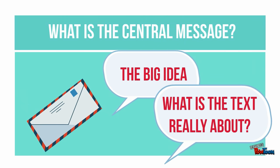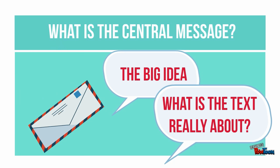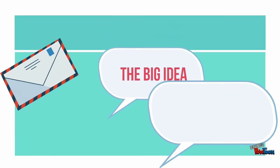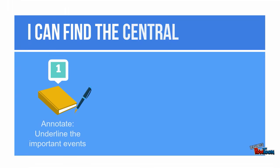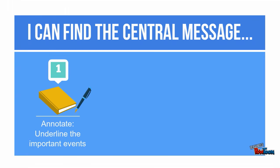Now you might be thinking, how can I find the central message? First, you need to annotate the text. Underline the important events in the story.